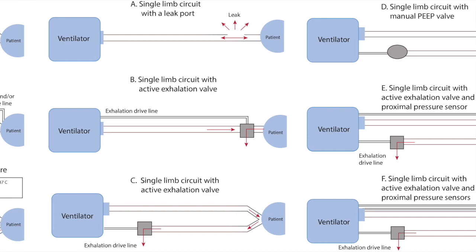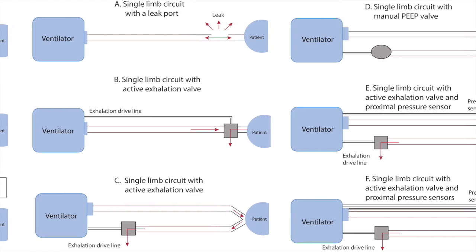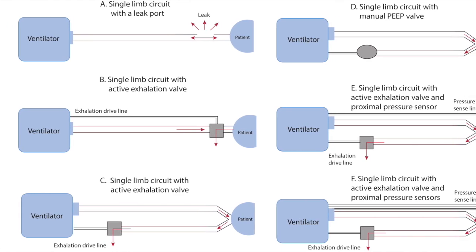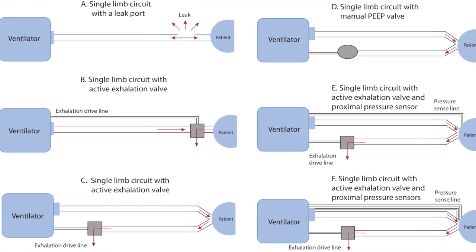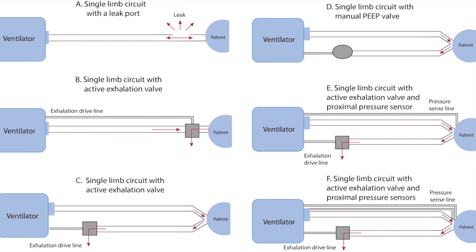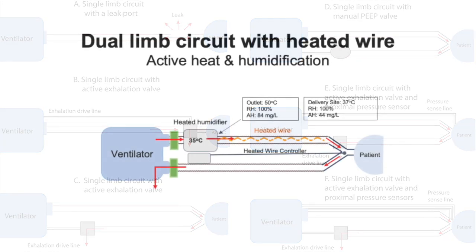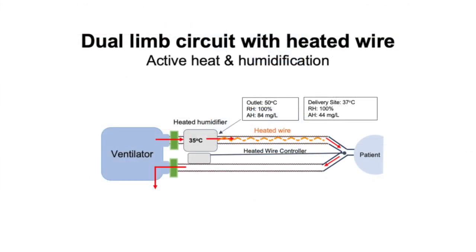In this module we'll focus on a standard dual limb circuit setup and a standard single limb circuit with active exhalation valve using internal PEEP. First, let's start with the dual limb circuit using a heated wire active heat and humidification system.